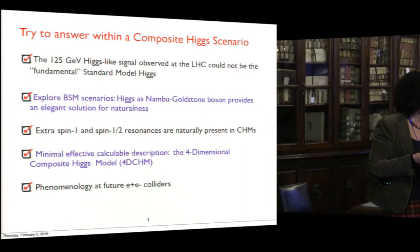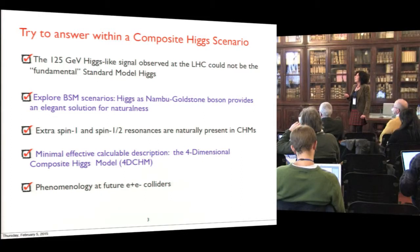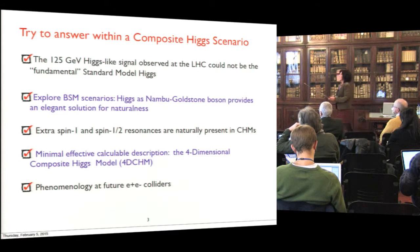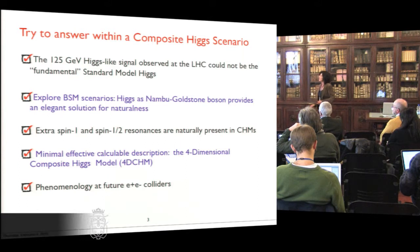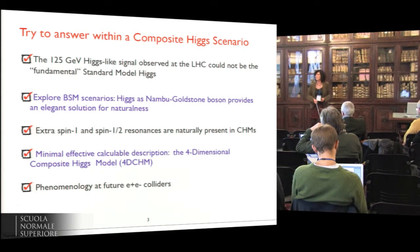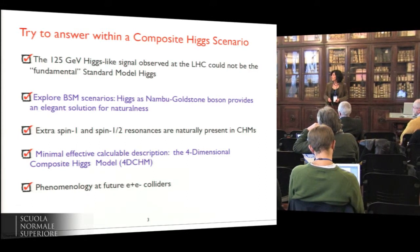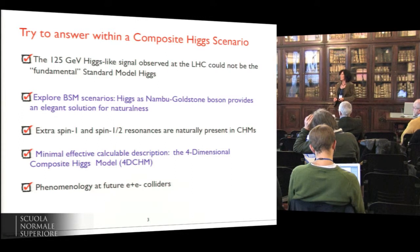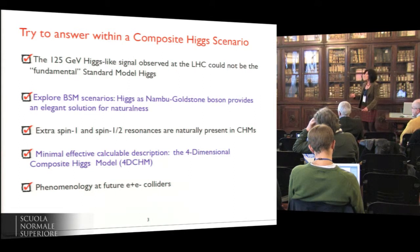Yesterday you had several talks on composite Higgs scenarios, so you know everything on this possibility. These scenarios naturally describe extra spin-1 and spin-1/2 resonances and give a rich phenomenology at future colliders. I will propose a minimally effective calculable description, which is the four-dimensional composite Higgs model to study this phenomenology.